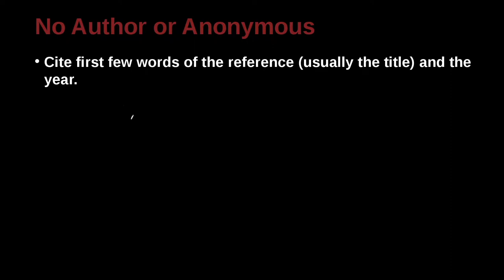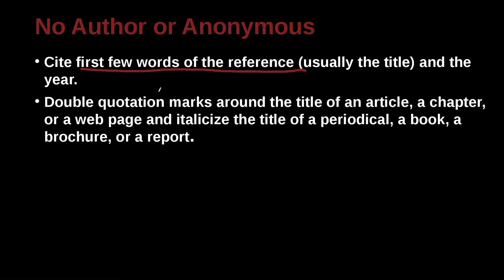You can make it clear by having the first few words of the reference, which is usually the title of the article or the title of the book. Double quotation marks are around the title of an article, a chapter, or a web page, and italicize the title of a periodical — which is a journal's name — a book name, or a brochure or report.